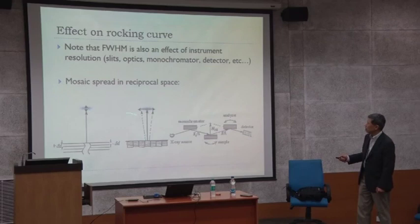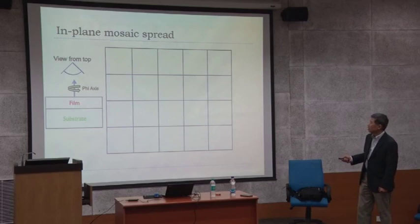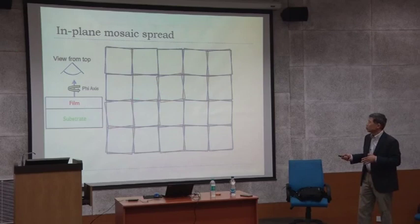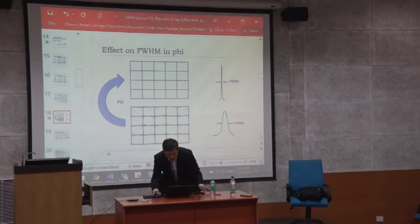It's a focused beam rocking curve — there's a very sharp one, and when you have a broader sample mosaic spread, you get a broader rocking curve scan. You also have in-plane mosaic spread, which cannot be detected by rocking curve. In order to detect this, you have to go to a phi scan or alpha scan. I can show you the geometry of this, going back to a simple way of describing symmetry.